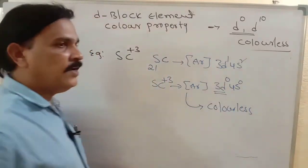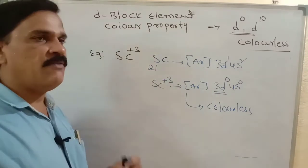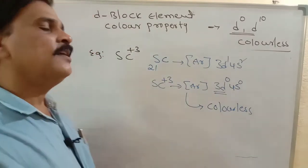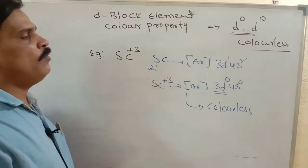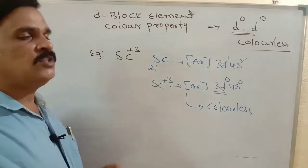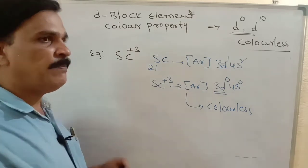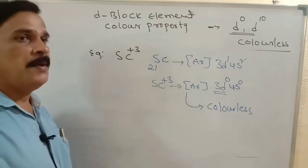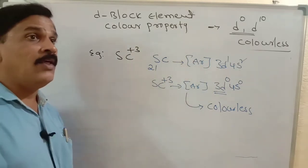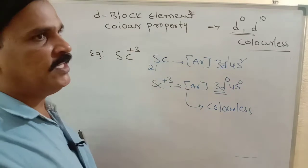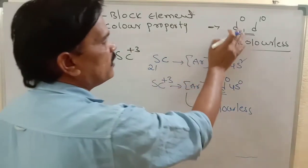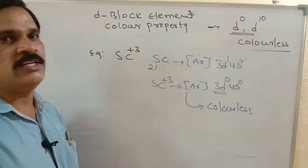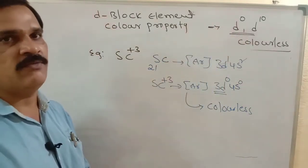If any D orbital has unpaired electrons, that metal ion may show color — it may be pink, green, or yellow. But for colorless compounds, we must identify D-0 and D-10 electronic configuration.